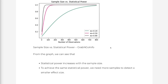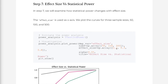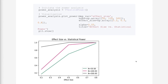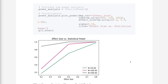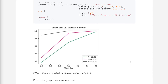In step 7, we will examine how statistical power changes with effect size. Effect size is used as the x-axis. We plot curves for three sample sizes: 50, 100, and 500. From the graph, we can see that statistical power increases with effect size. When the effect size is small, a larger sample size is needed to achieve a good power value. As effect size increases, the impact of sample size on power becomes smaller.